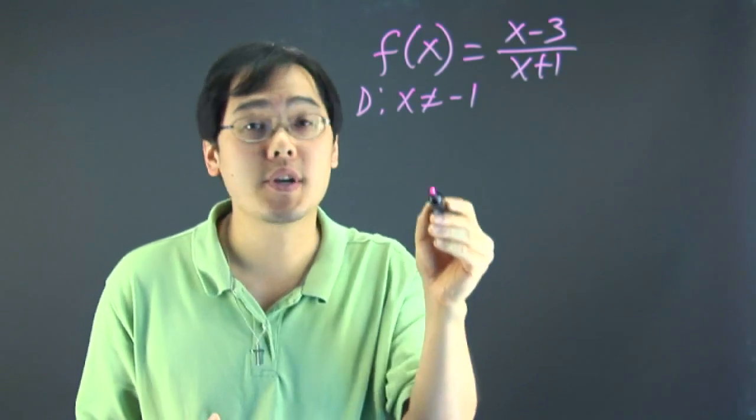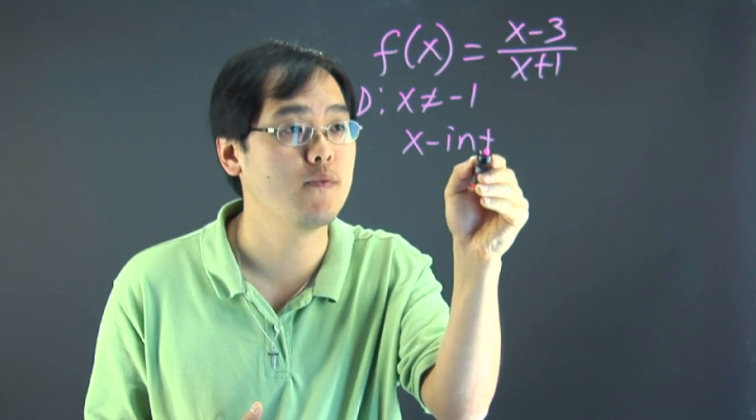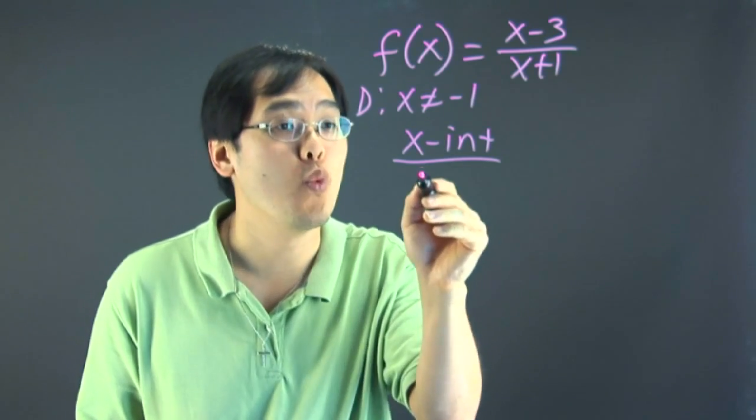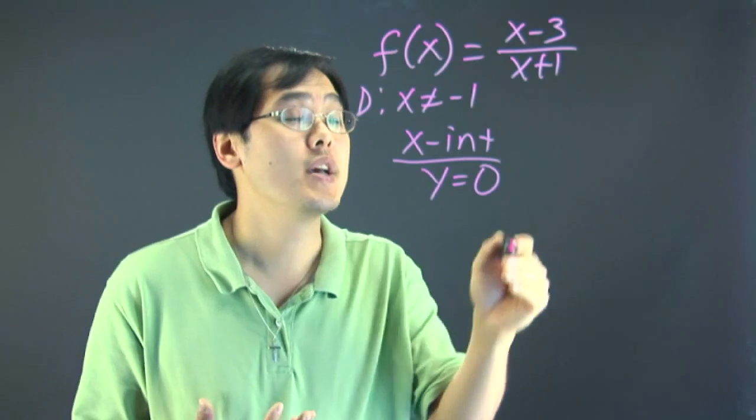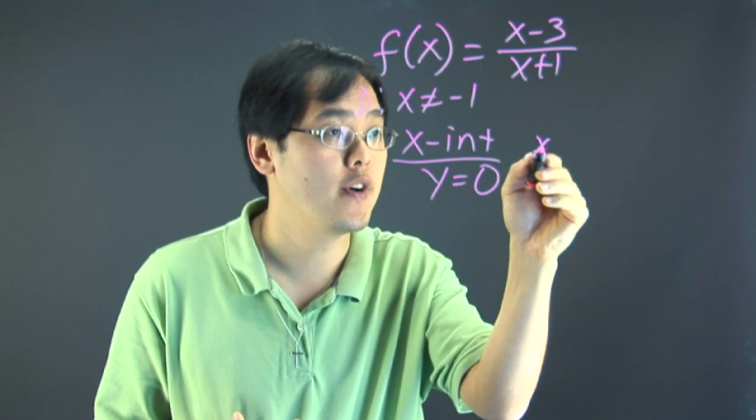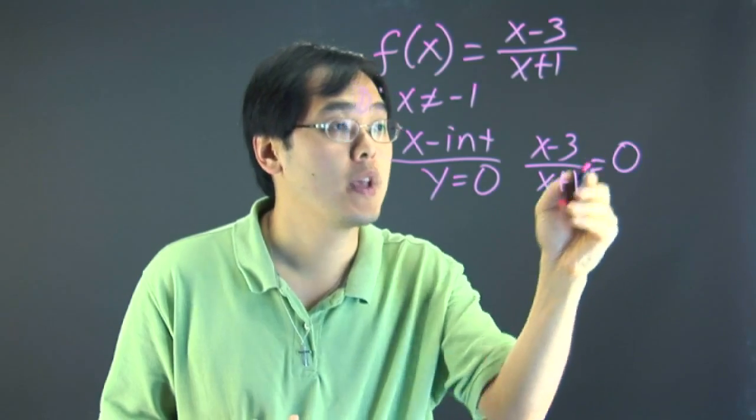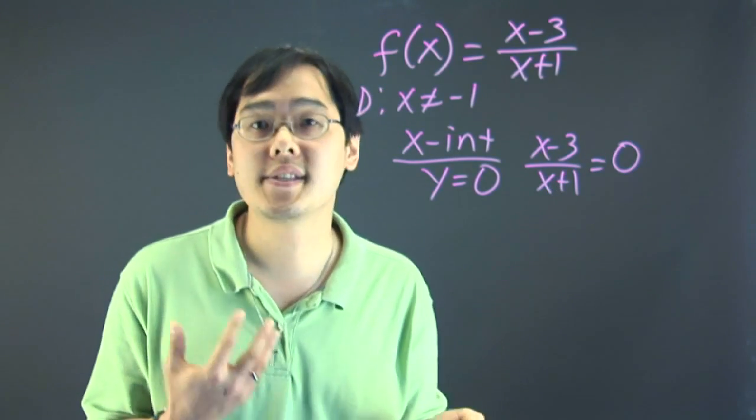Now in order for us to find the x and y intercepts, we have to think about the original definition of what an x intercept is. The x intercept touches the x axis when y is equal to zero. So what that means here is you have to take your expression, your function, and set it equal to zero. Now you got to think about from your algebra lessons before, when is a fraction zero?